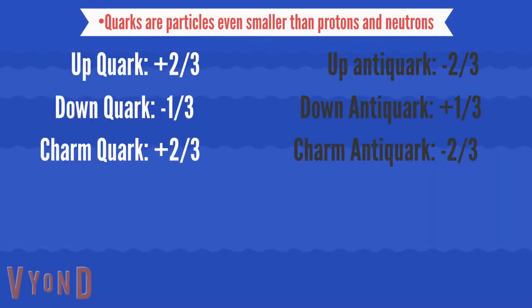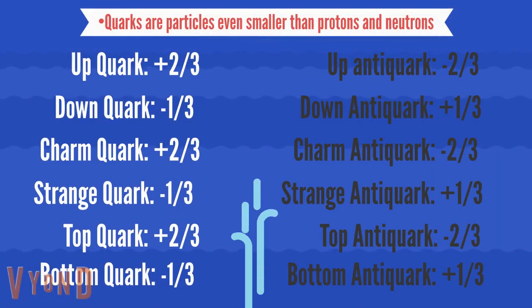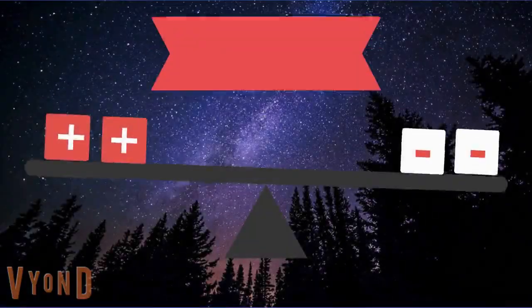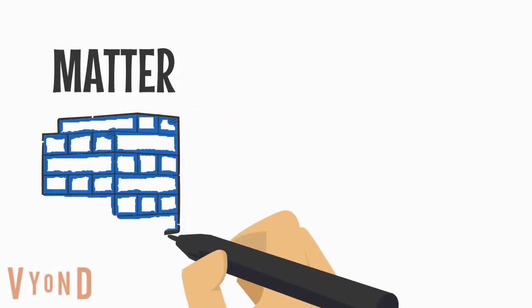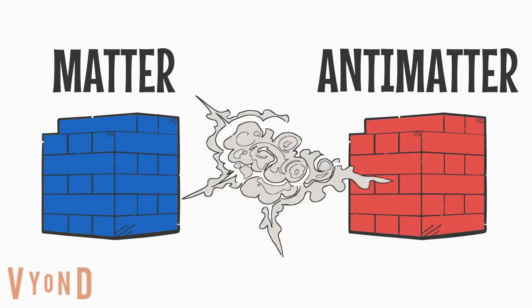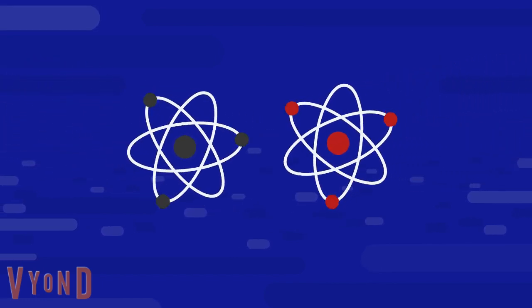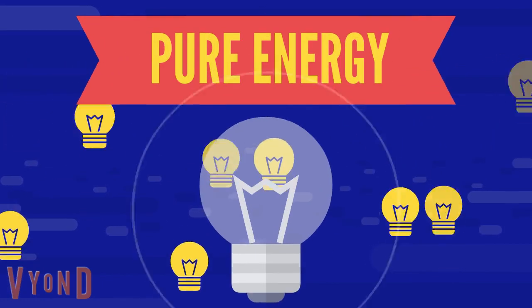Because matter and antimatter have opposite charges, and we assume our universe is electrically neutral, equal parts of matter and antimatter should have been created at the Big Bang. But at the same time, when matter and antimatter come into contact, they annihilate into pure energy.